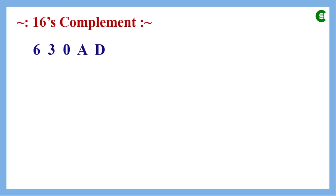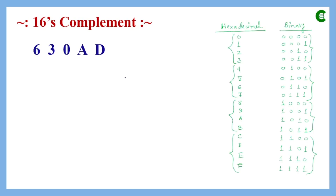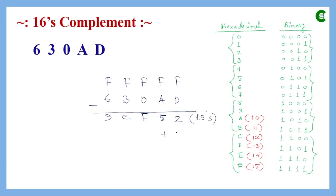Next we find the sixteen's complement of the same hexadecimal number. As expected, we take the fifteen's complement already found and add 1. So 2 plus 1 gives 3, and all other digits remain the same, giving us the sixteen's complement.